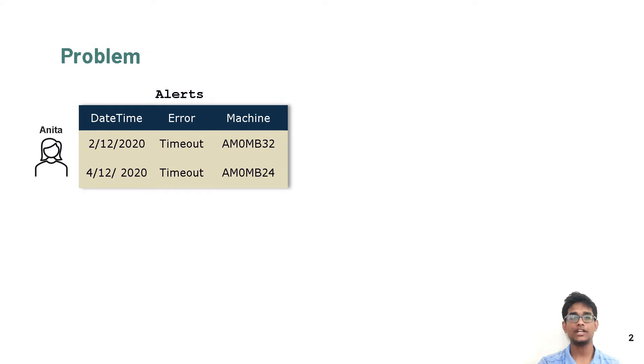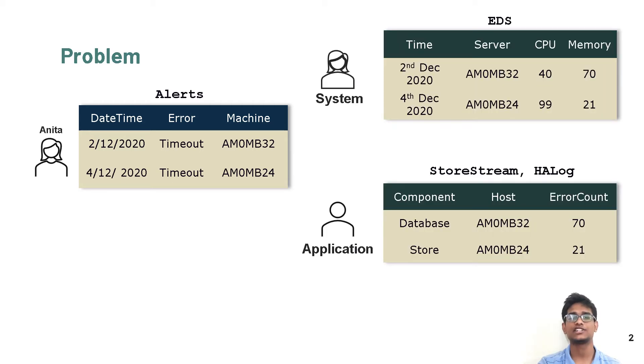Let me motivate the problem we are trying to solve with an example. An analyst, Anita, wants to build a root cause analysis dashboard. She starts with a table called alerts, which gives her a list of errors which has occurred in the data center. For analyzing these errors, she needs information from different sources, such as the system and application layers. However, the tables containing this data can have names such as EDS, StoreStream, HALOG etc., which is not very easy to understand.